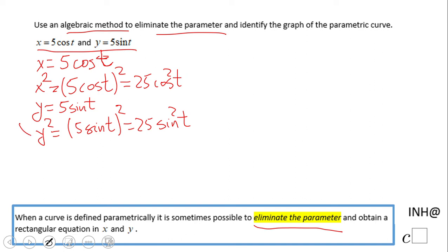And now we're going to add these two. We're going to add them right here. We're going to have x squared plus y squared. So like I said, we add them, and what do we get? 25 cosine squared t plus 25 sine squared t. And what do you notice?